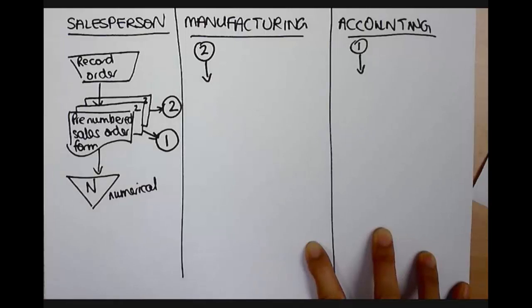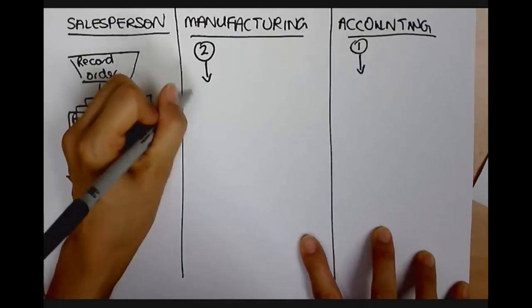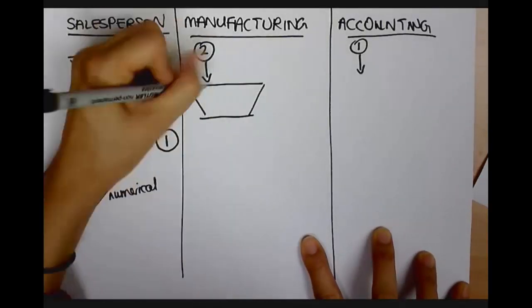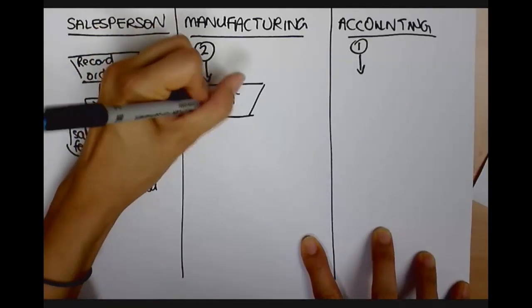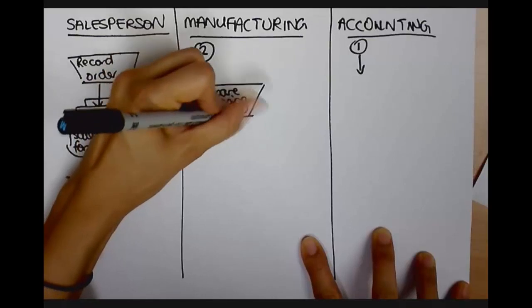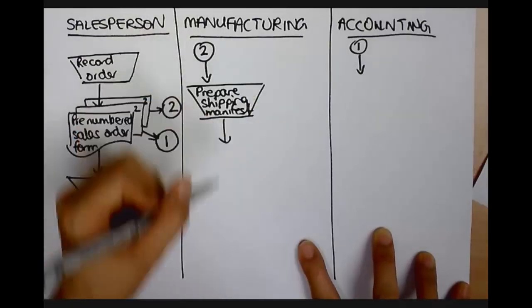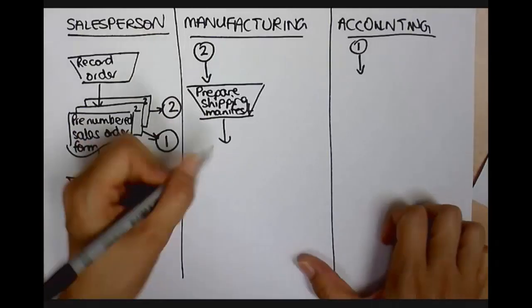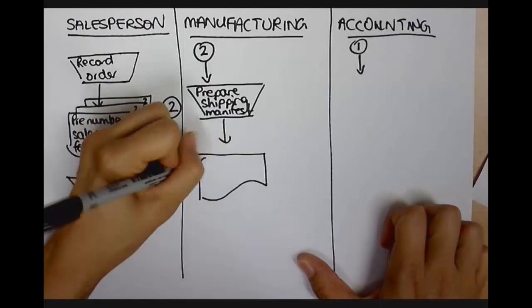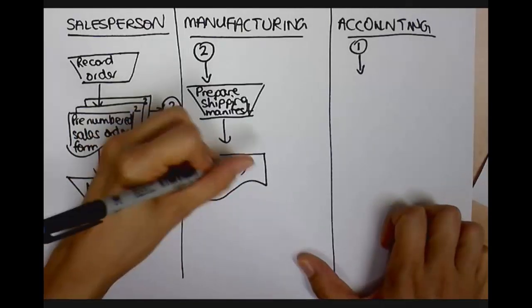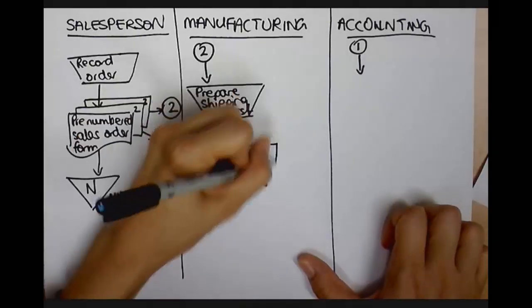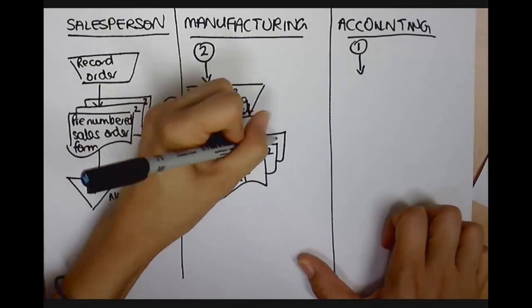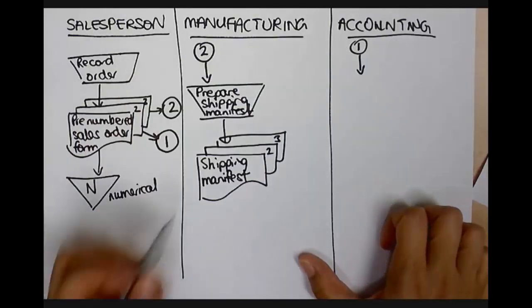They go and construct the furniture and prepare a shipping manifest so that the goods can be delivered to the customer. Alright, so they prepare a shipping manifest. Alright, so we've got a document. And that document, there are three copies of it. So, shipping manifest, second copy, third copy.